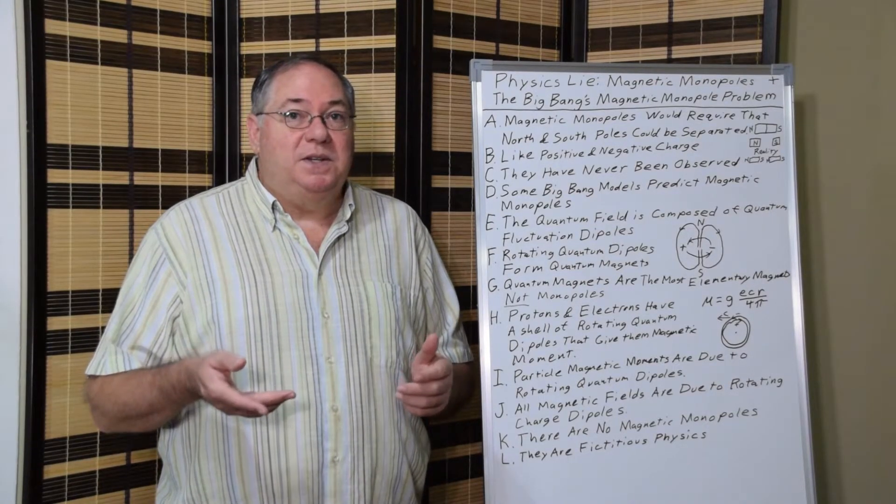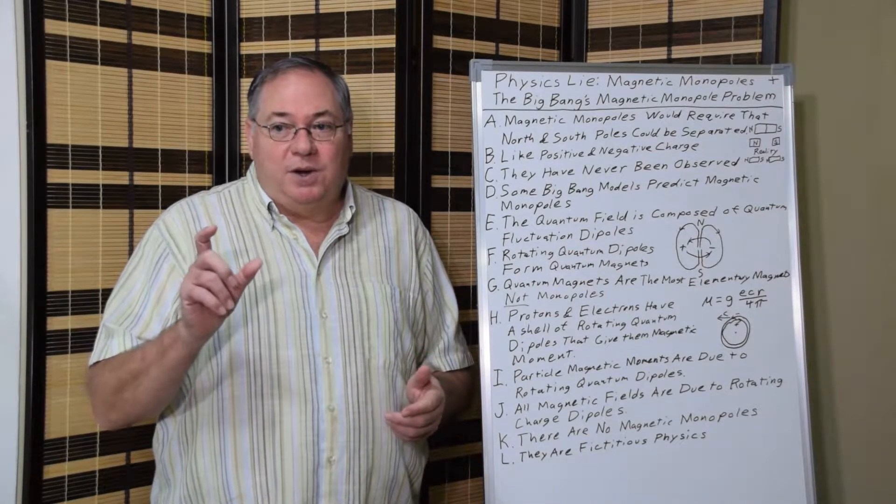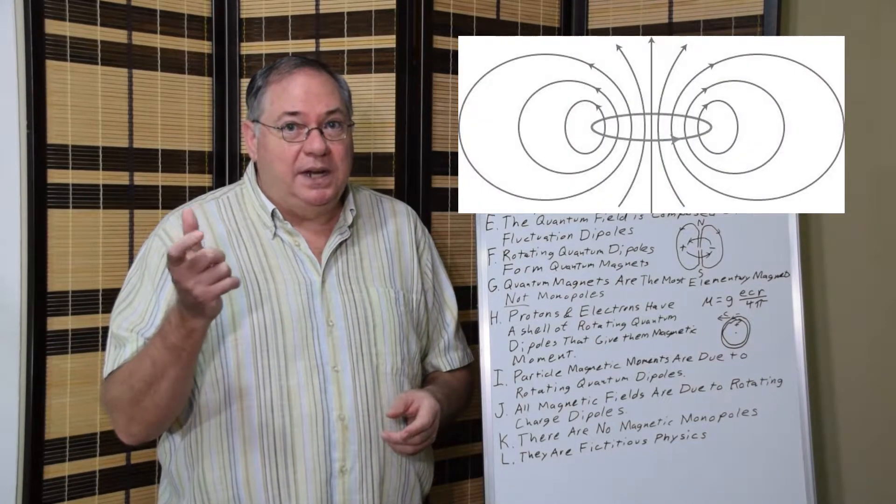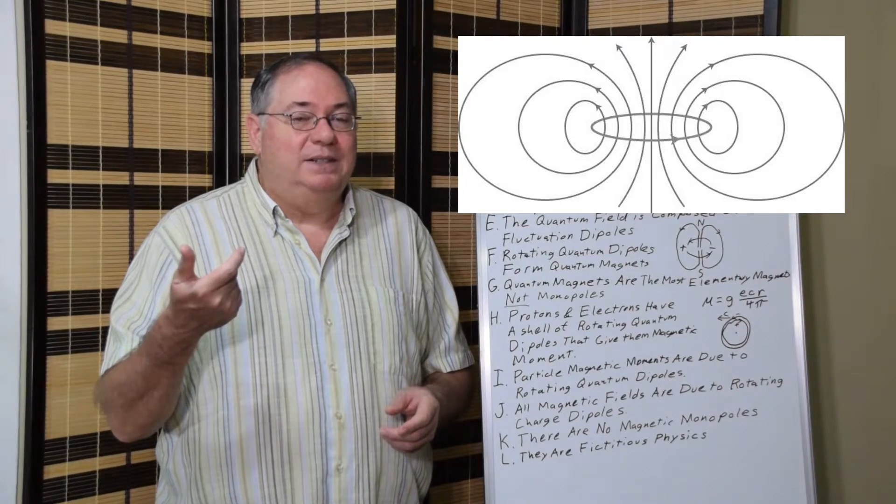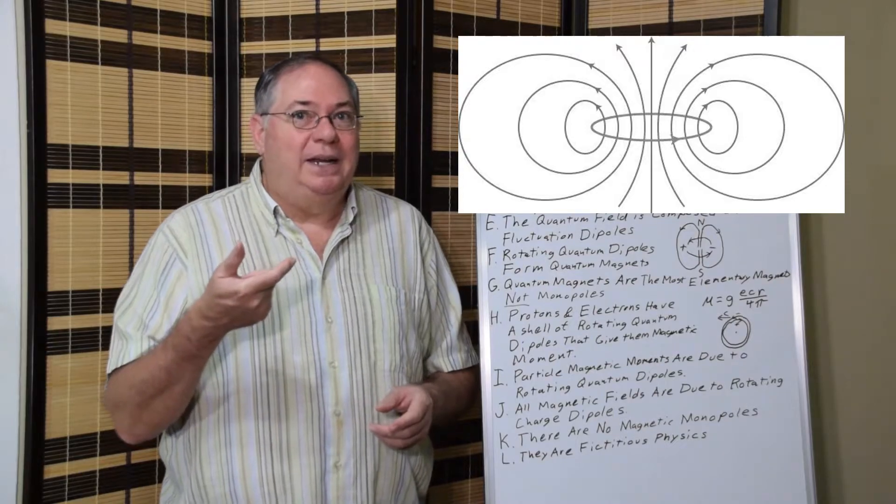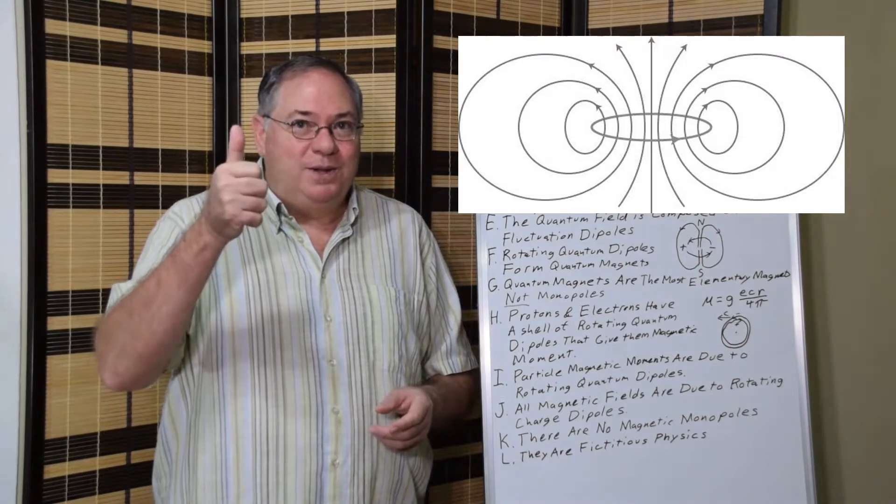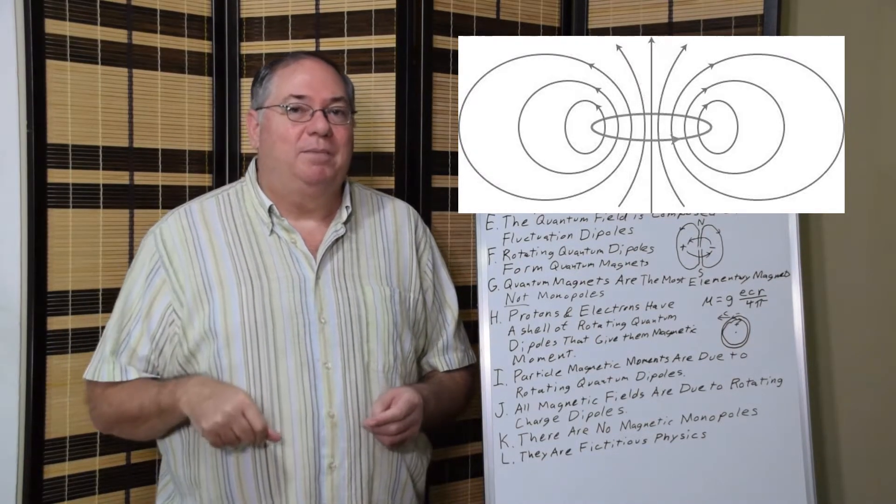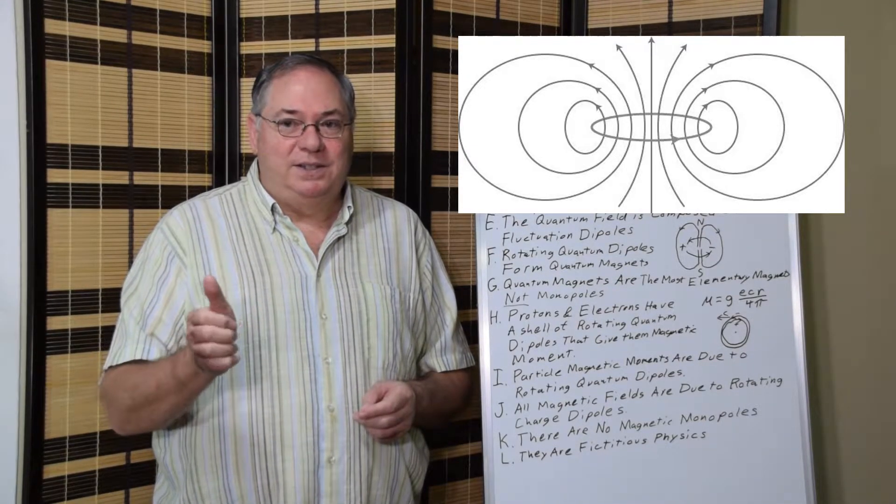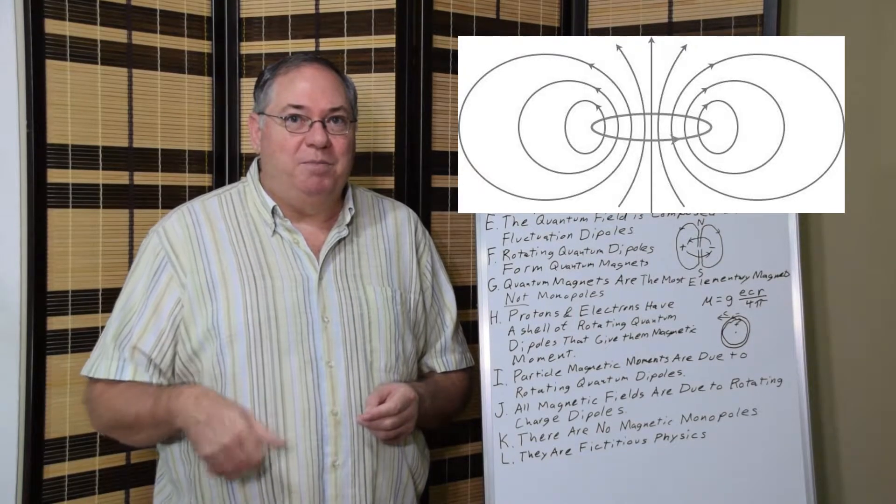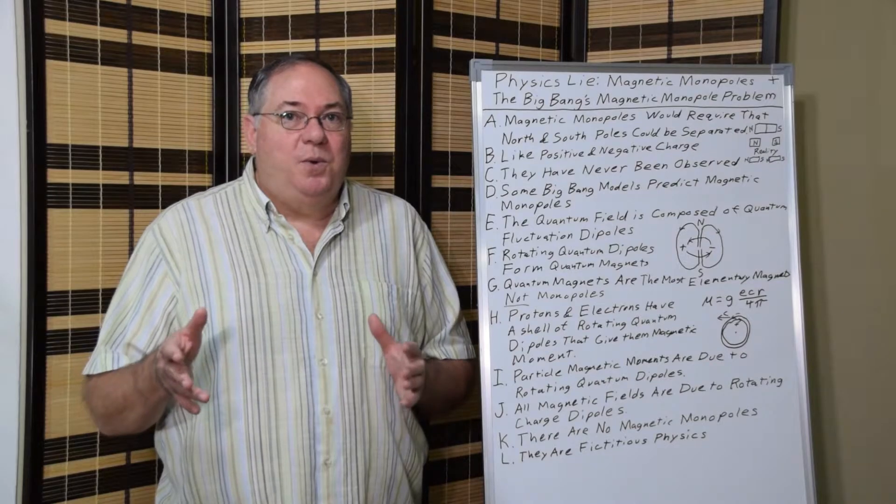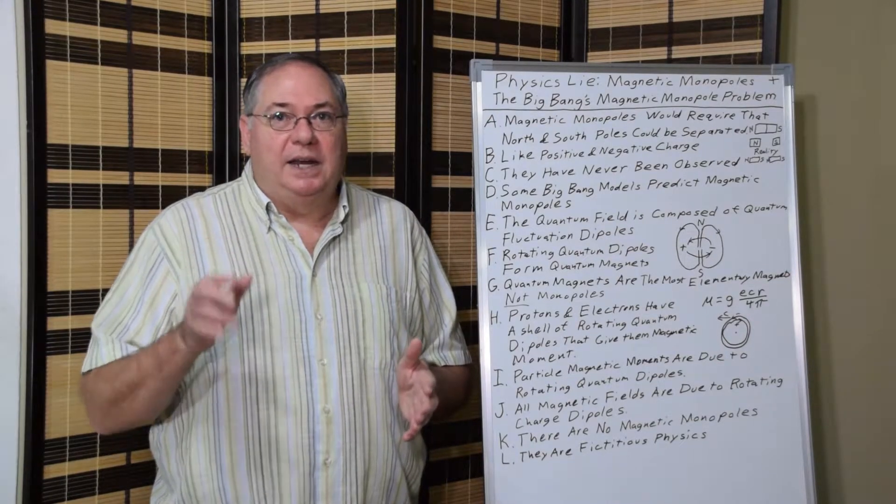And that tells us that these charge dipoles exist in space. And when a charge dipole rotates, it forms a magnetic field. So that if it's rotating in this plane, it forms a north pole this way and a south pole this way. And you can use the right-hand rule where you rotate your fingers in the direction of rotation and your thumb points to the north pole. So that's a real quick way to understand it.